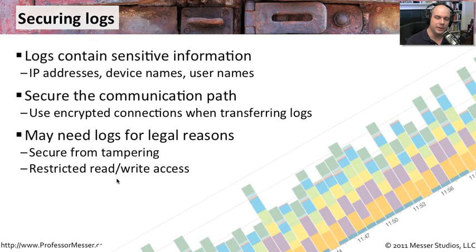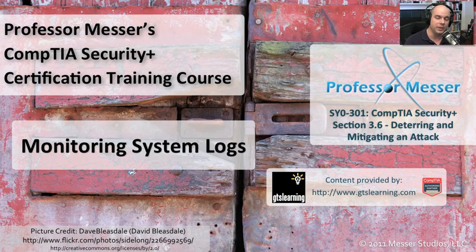You may also need logs for legal reasons. You may need to confirm six months later that nobody has tampered with them. That becomes very important from a legal perspective. One approach is performing MD5 hashes when you store and archive those logs — six months later, you can perform the same MD5 hash and compare it to what you took originally to confirm the logs haven't been tampered with. Access to these logs should also be restricted: only people who need to read them should have access, and only authorized devices should be able to write to them. Otherwise, third parties could gather information from or inject information into your logs.